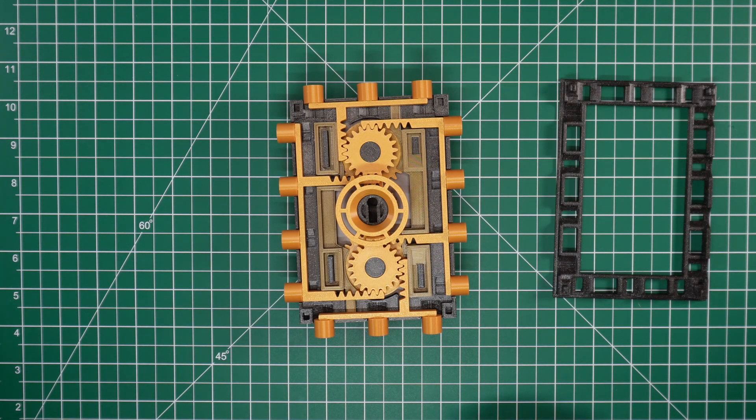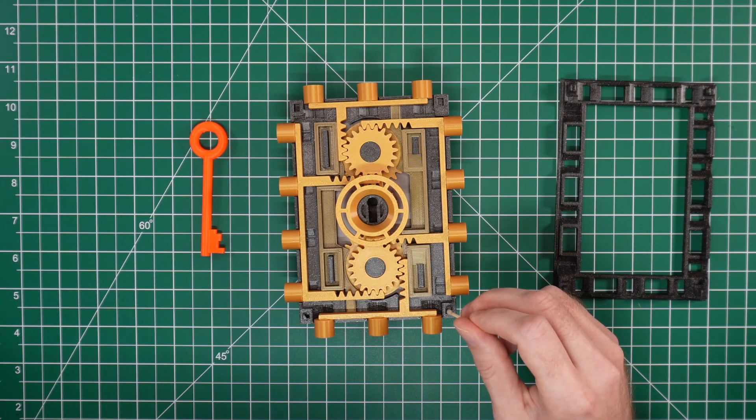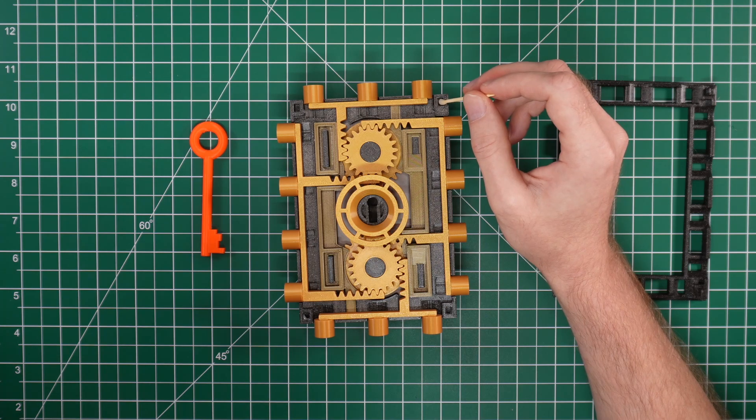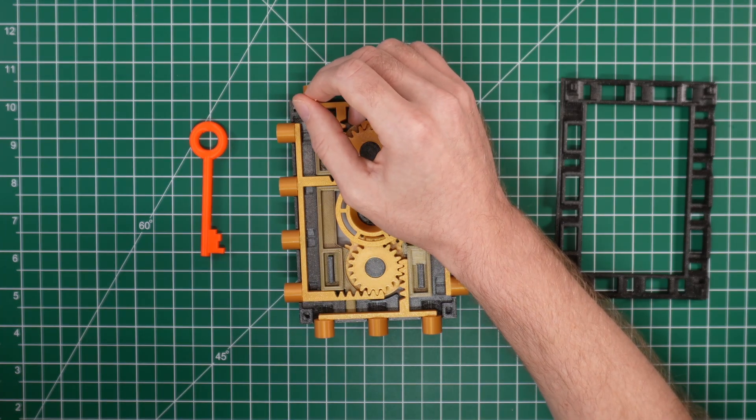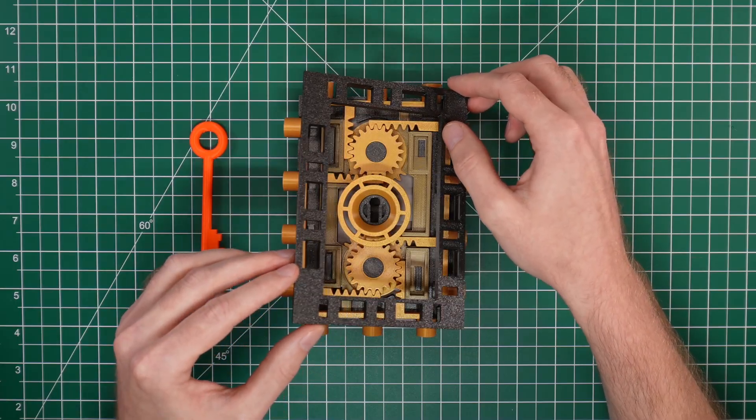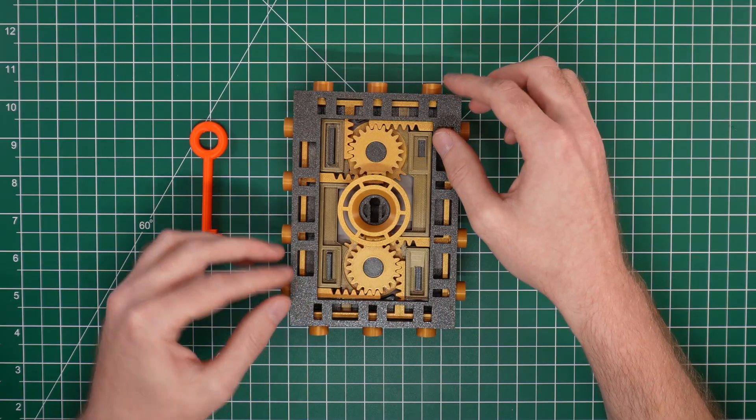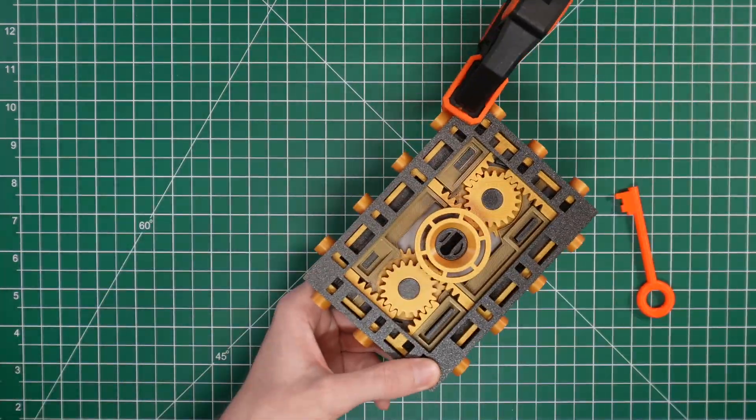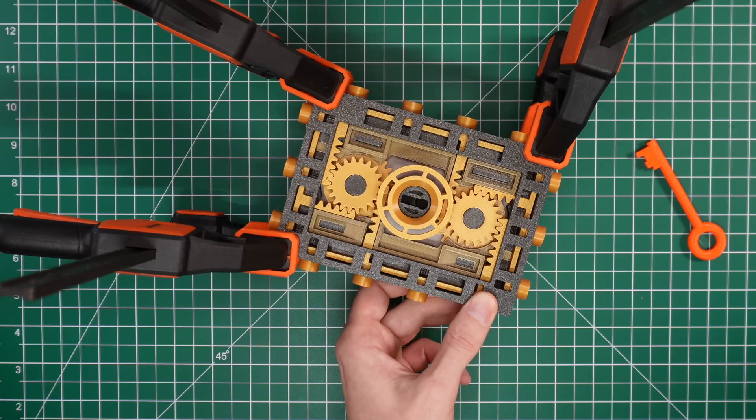The frame cap goes on next, and it will secure all of the racks to the door. There are four indents on the corners of the door frame which align with four pegs on the frame cap, so just add some glue into the indents and press the pieces together. It's a good idea to clamp the corners while the glue sets, but it's not strictly necessary if you don't have any clamps available.